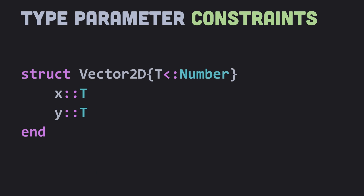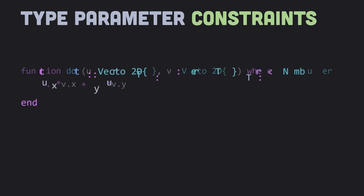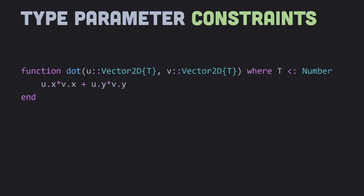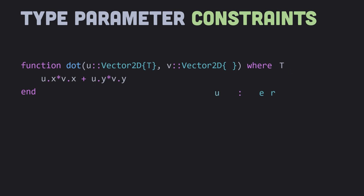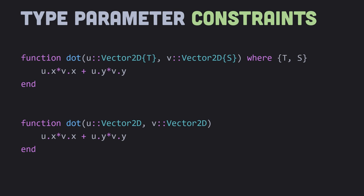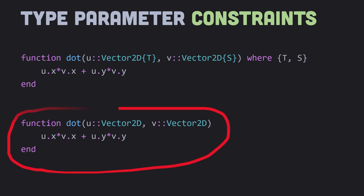We do this by introducing a constraint on the type parameter. Here we are saying that the type parameter passed to the Vector2D struct should be a subtype of Number. Constraints can be provided in many different ways. We can also put constraints on functions — in this definition, the type parameter for arguments u and v must be a subtype of Number. If you don't want any constraints, you could write something where u uses a different type parameter T from v which uses S, with no restriction on what T and S can be. Julia allows you to accomplish the same thing more concisely, as shown in the dot function below.